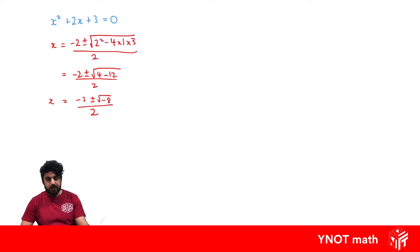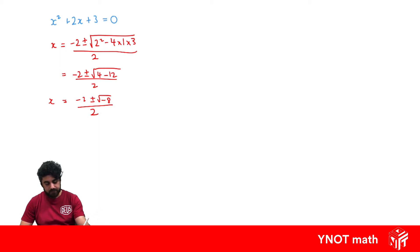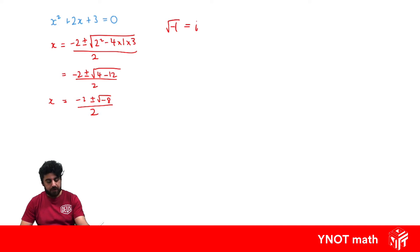But now we're going to define something where we actually can get solutions. We're going to define that the square root of negative 1 equals i, where i is some imaginary number.